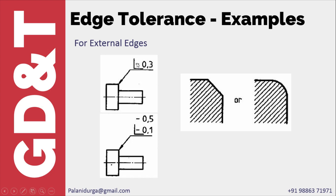A minus sign means that undercut — that is, material removal — is permitted. You can give a 0.3 by 0.3 chamfer or R 0.3 fillet radius. In some examples we can see two tolerance values, which specifies the limits — meaning the chamfer can range from 0.1 to 0.5, and similarly the fillet radius can range from 0.1 to 0.5.